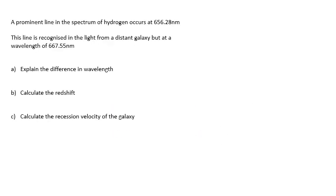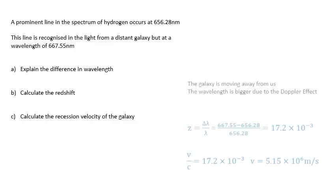Here's a typical example you might get in the exam. Make sure you can do this. A prominent line in the spectrum of hydrogen occurs at 656.28 nanometers. This line is recognized in the light from a distant galaxy but at a wavelength of 667.55 nanometers. Explain the difference in wavelength. Calculate the redshift. Calculate the recession velocity of the galaxy. Pause the video and have a go yourself.